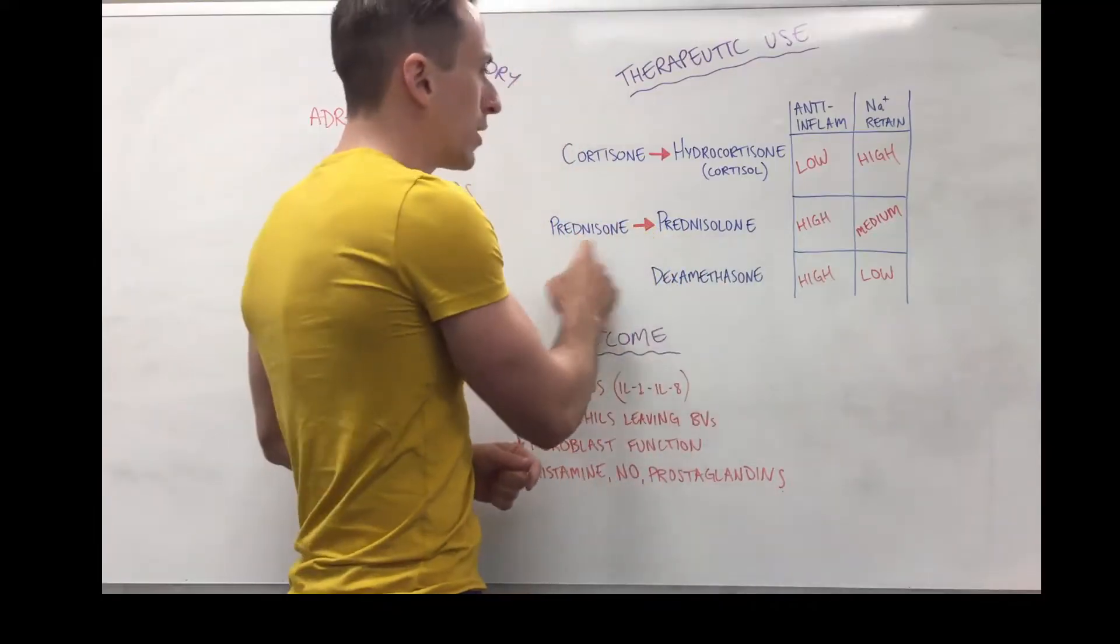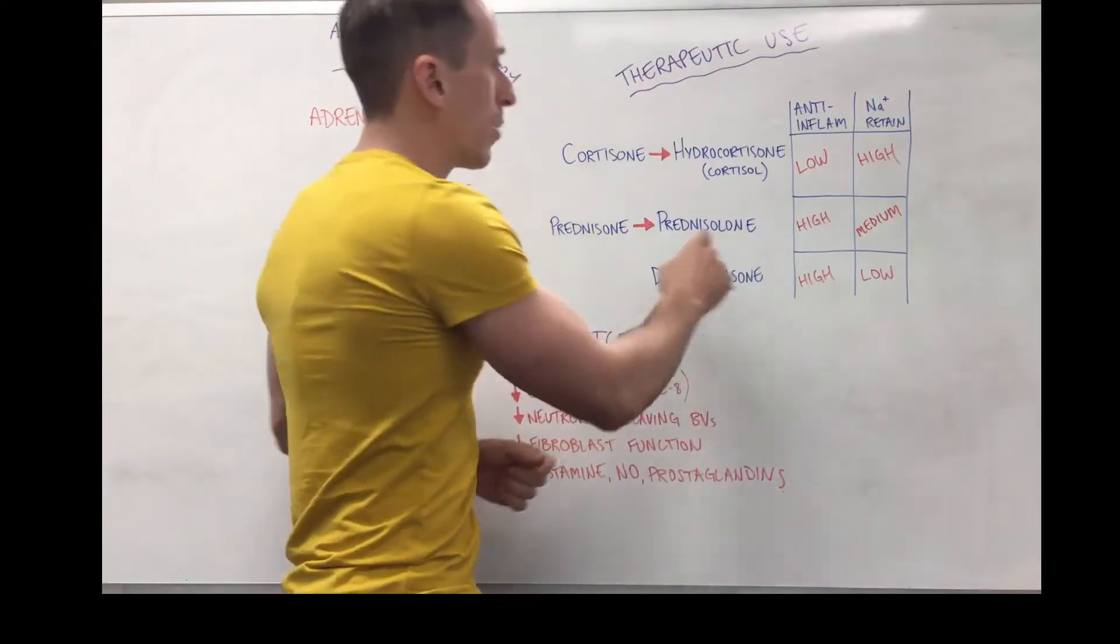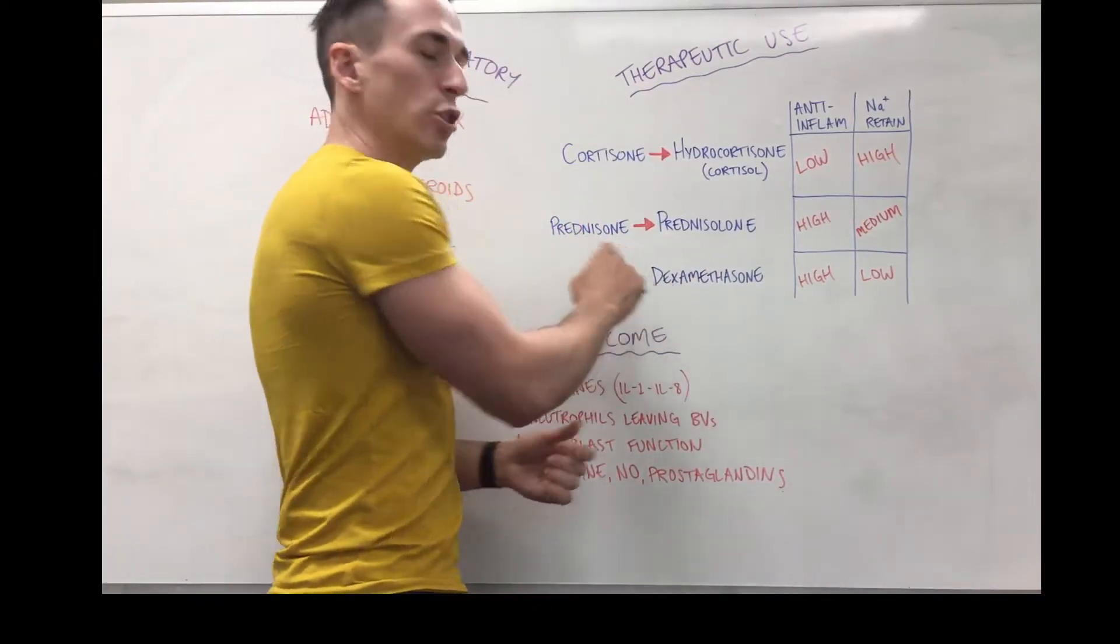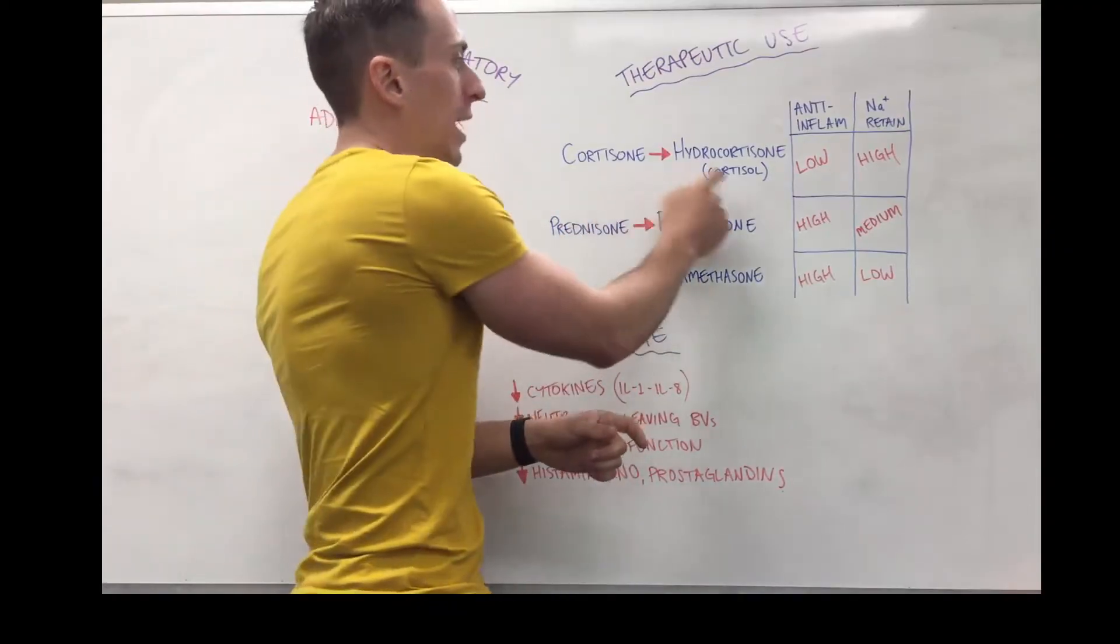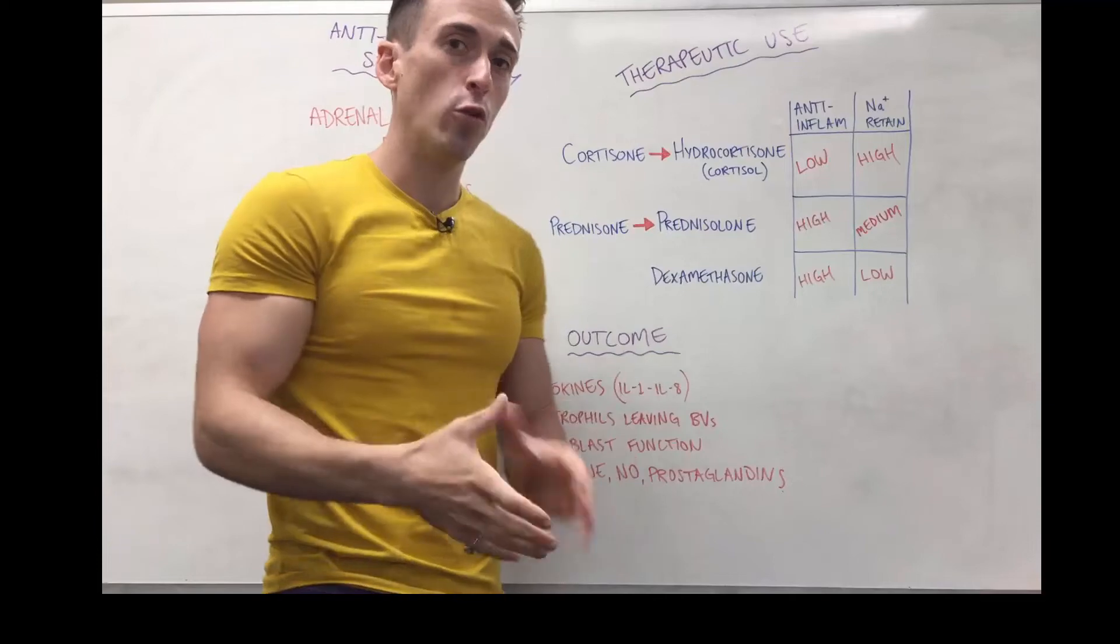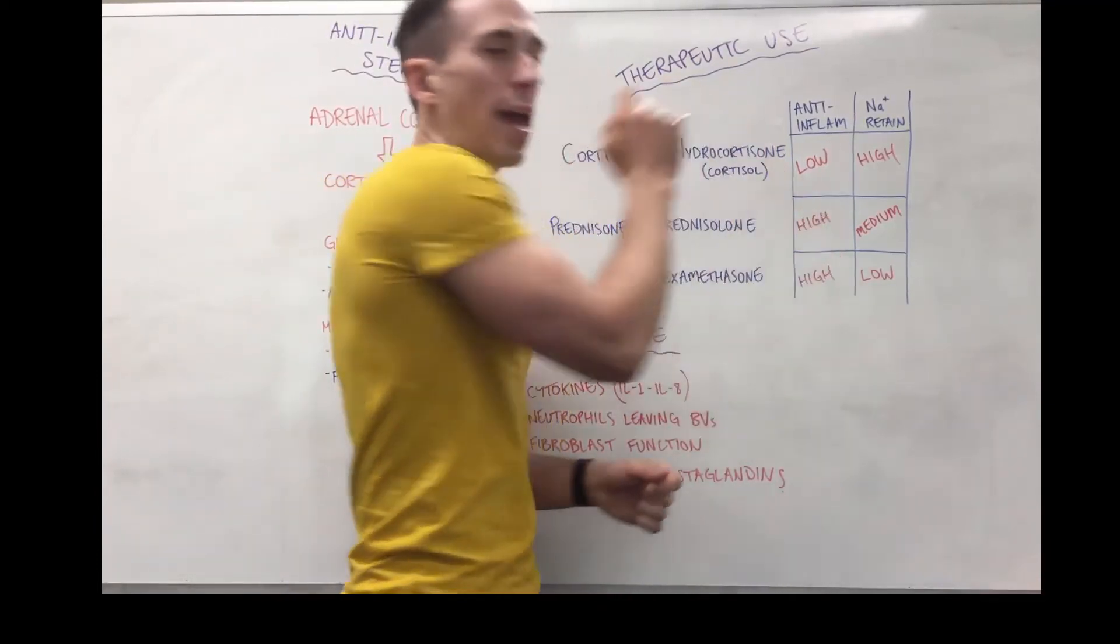Now if we look at prednisone and prednisolone, what you're going to find is that prednisolone is the active steroid and prednisone is not the active steroid, just like we had here. Prednisone needs to be turned into prednisolone or transformed into it by the liver.